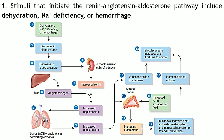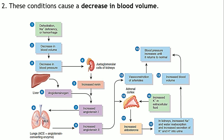The main control mechanism is the renin-angiotensin-aldosterone (RAA) pathway, as also covered under the urinary system. The main stimuli are dehydration, low sodium ion levels, or hemorrhage — excessive blood loss. All three situations reduce blood volume, which decreases blood pressure. This decrease in blood pressure is sensed by the juxtaglomerular cells — modified smooth muscles in the walls of the afferent arterioles in the kidneys.